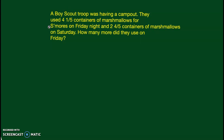The first number story: a Boy Scout troop was having a camp out. They used four and one-fifth containers of marshmallows for s'mores on Friday night and two and four-fifths containers of marshmallows on Saturday. How many more did they use on Friday? Because they want to know the difference between the two, that's going to give us a subtraction problem: four and one-fifth subtract two and four-fifths.